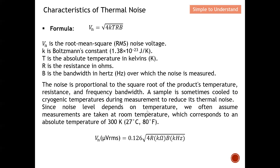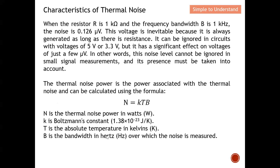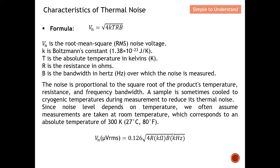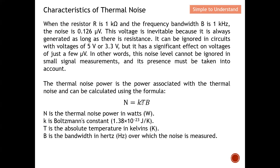Since noise level depends on temperature, we often assume measurements are done at room temperature, which we take as 300 Kelvin (27°C). At room temperature, you just enter the resistor value in kilohms and the bandwidth in kilohertz to get the voltage in microvolts RMS. For example, when the resistor R is 1 kilohm and the frequency band is 1 kilohertz, the noise is 0.126 microvolts, as illustrated by the equation.